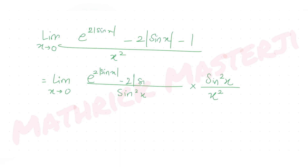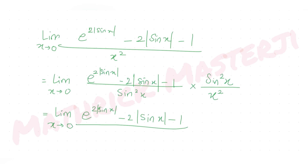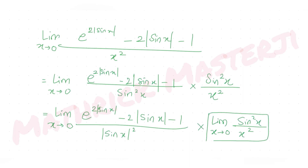The expression splits into [e^(2|sin x|) - 2|sin x| - 1] / |sin x|² times sin²x / x². Since sin²x is always positive, we can write |sin x|². We know limit x→0 of sin x / x = 1, so sin²x / x² also equals 1. That part becomes 1.